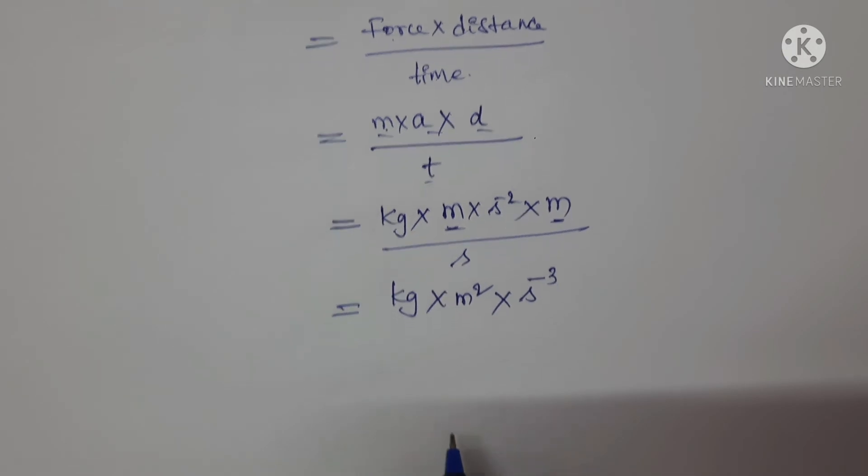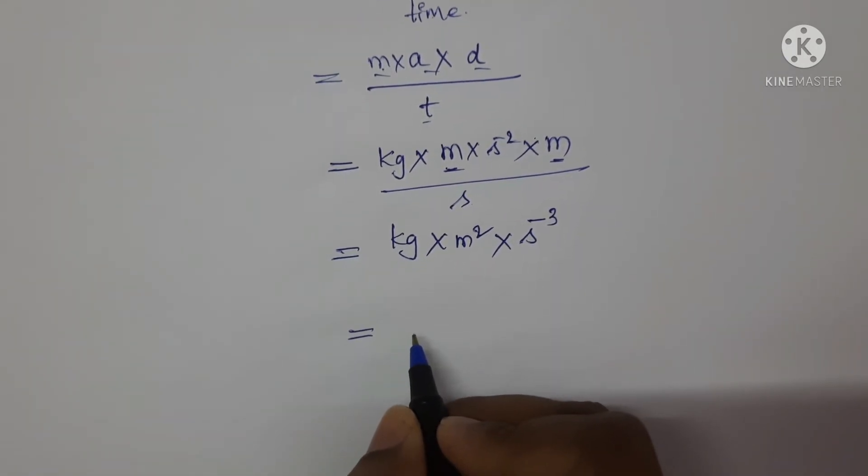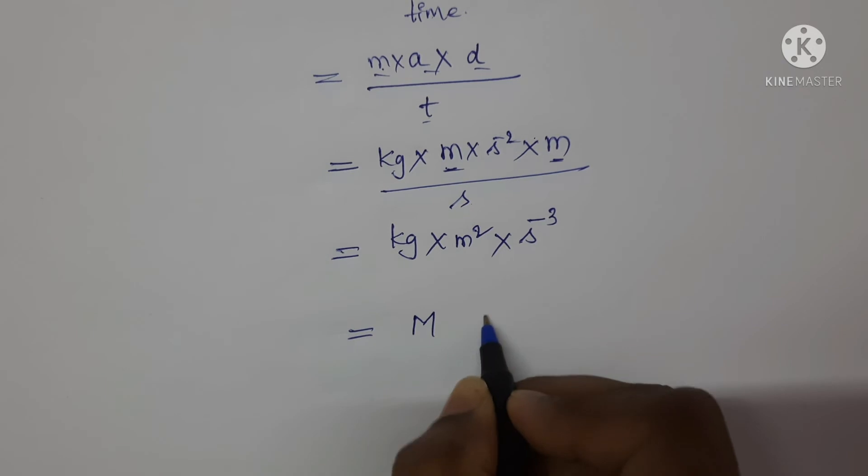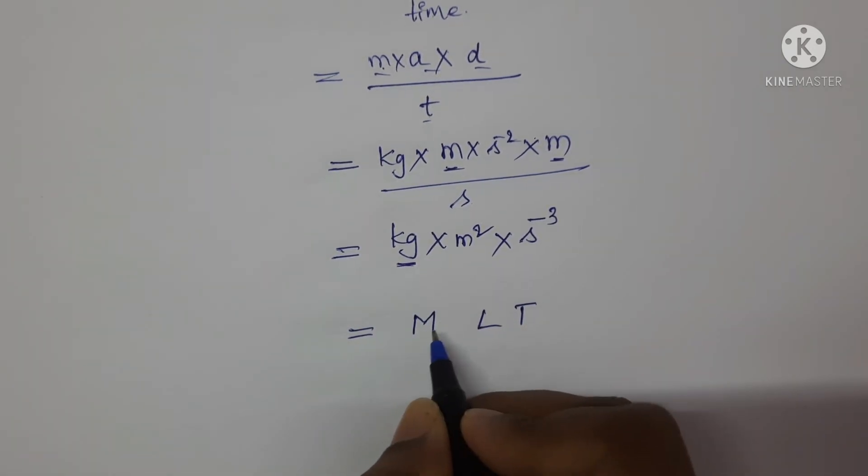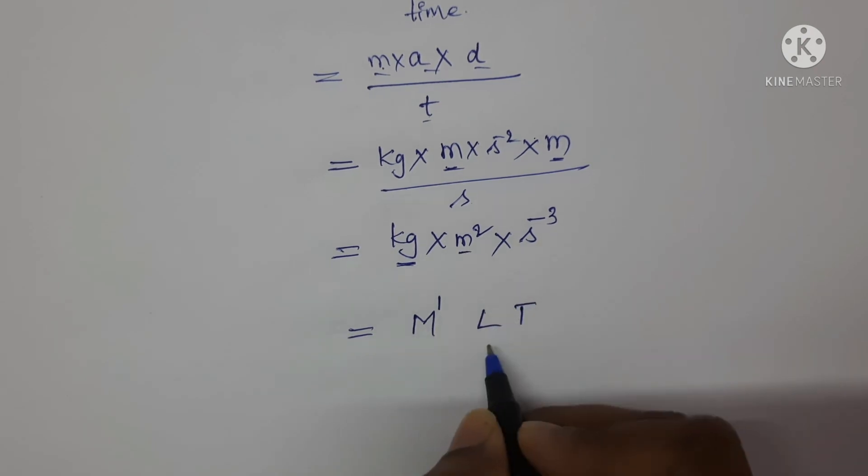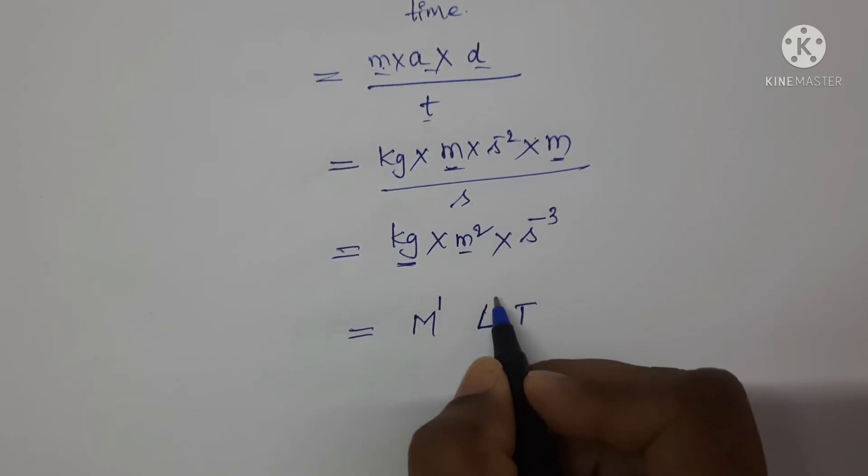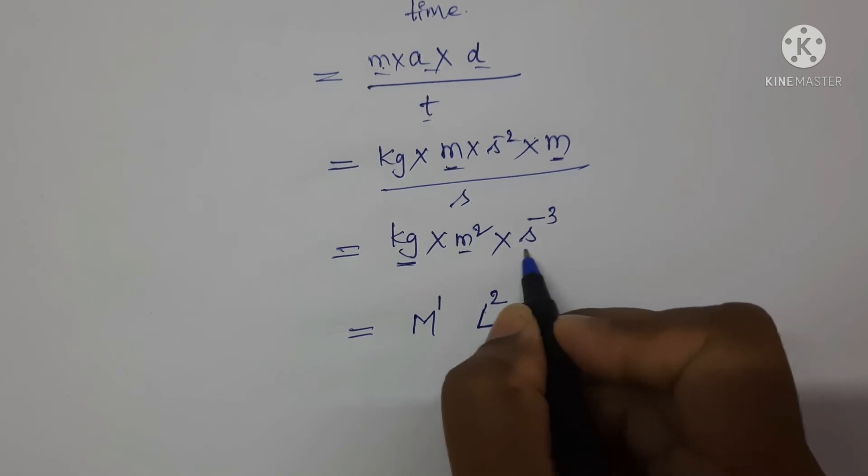Now express this in MLT format. Here, kg is expressed in terms of capital M, so M power 1. Meter is expressed in terms of capital L, so square is there, so L square. Second is expressed in terms of capital T.